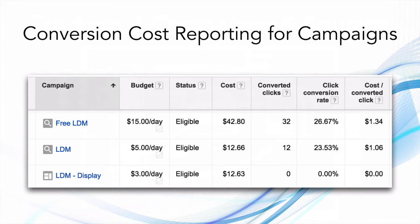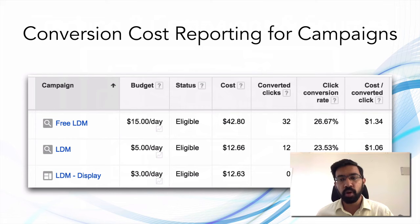Conversion cost reporting for campaigns inside Google AdWords looks like this. There are two campaigns: 'Free LDM' and 'LDM'. We spent $42 on the first and $12 on the second. The first got 32 converted clicks and the second got 12 converted clicks. But looking at the rightmost column, the cost per converted click is $1.06 for the second campaign versus $1.34 for the first. So even though the first campaign gave more clicks and conversions, the cost per converted click is much higher — making it clear that the second campaign is performing better. We would increase the budget on the second campaign to get more leads at the lowest cost per converted click.